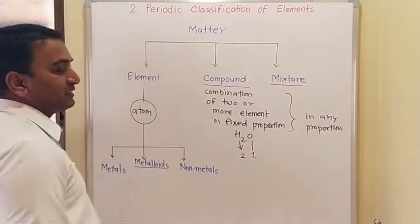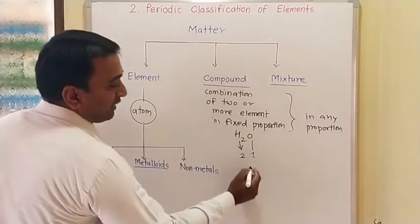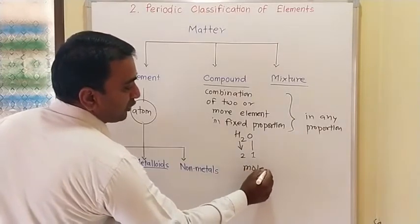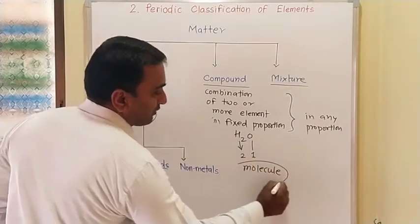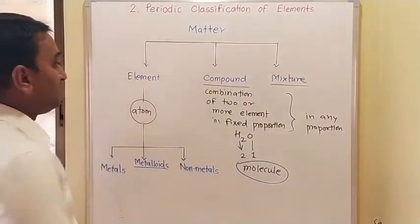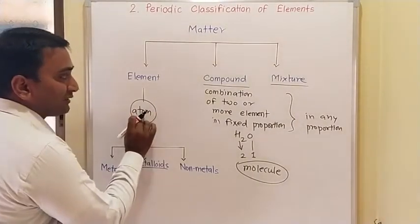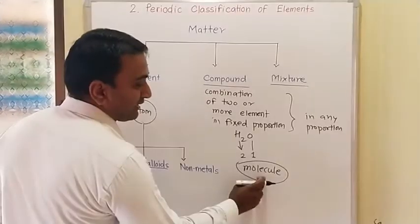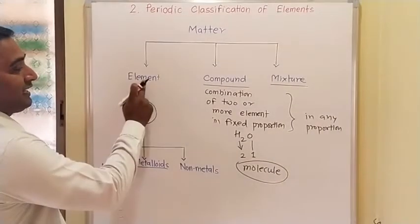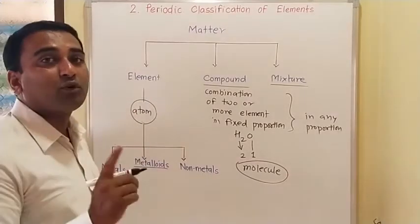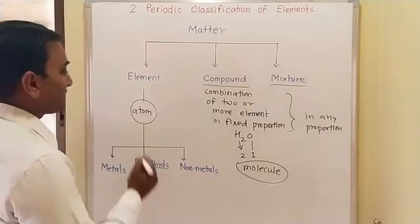Matter's smallest particle is an atom. But the smallest particle of a compound is a molecule. This is a very important part we are discussing now. The smallest particle of an element is an atom, and the smallest particle of a compound is a molecule. Elements may be monoatomic, diatomic, or polyatomic.